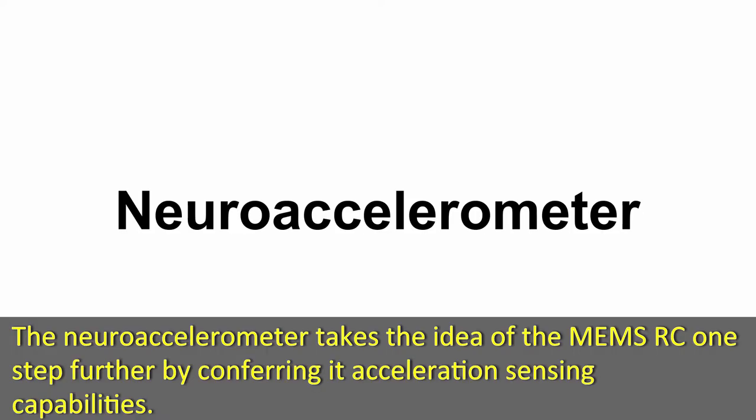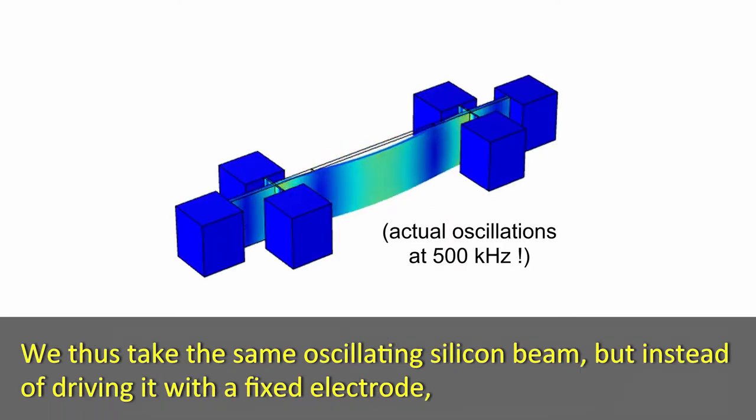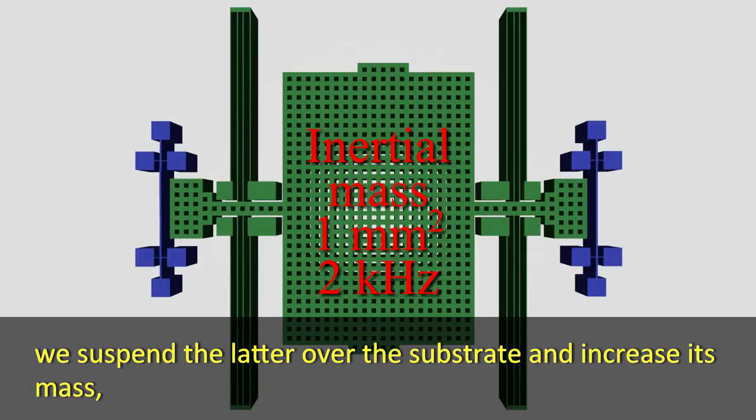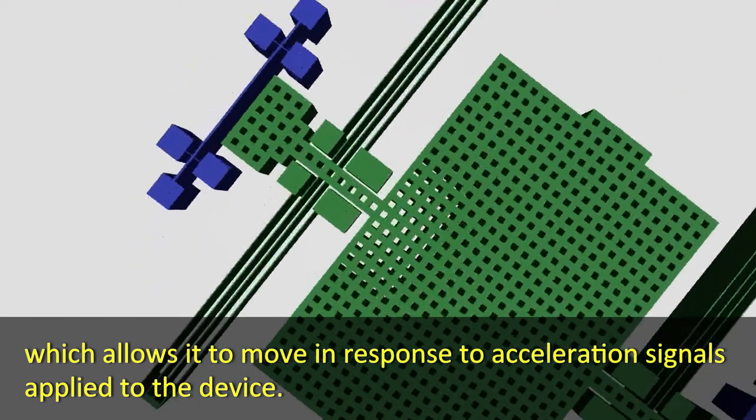The neuroaccelerometer takes the idea of the MEMSRC one step further by conferring it acceleration sensing capabilities. We thus take the same oscillating silicon beam, but instead of driving it with a fixed electrode, we suspend the latter over the substrate and increase its mass, which allows it to move in response to acceleration signals applied to the device.